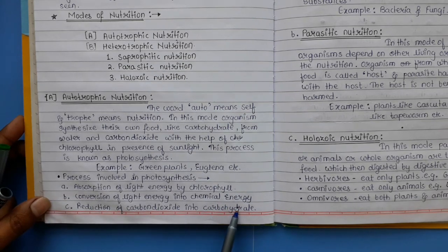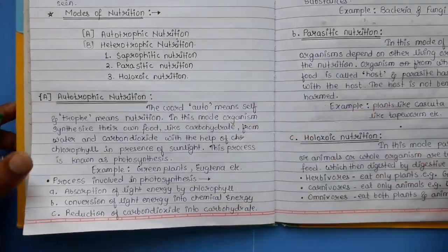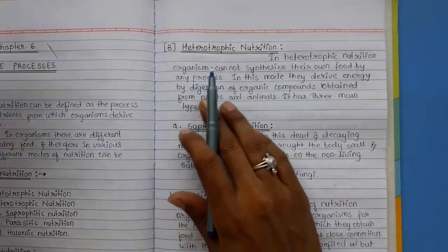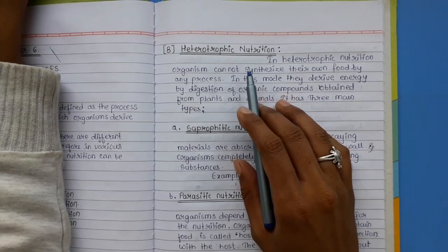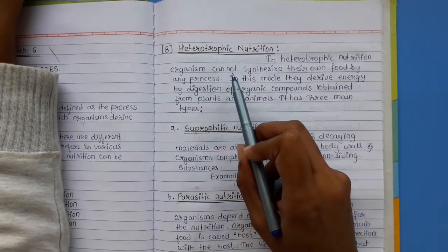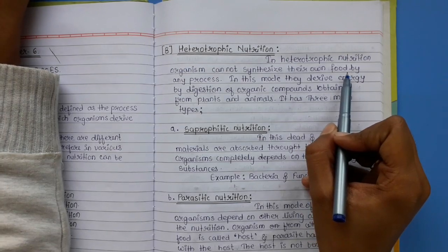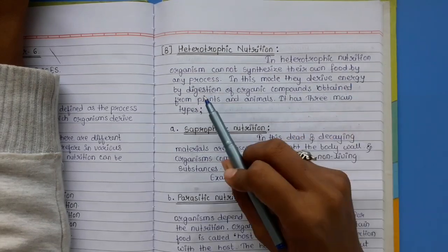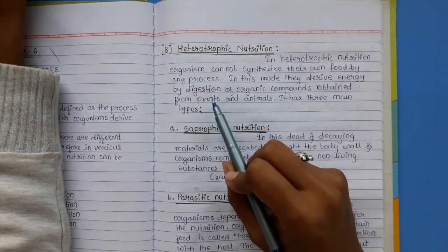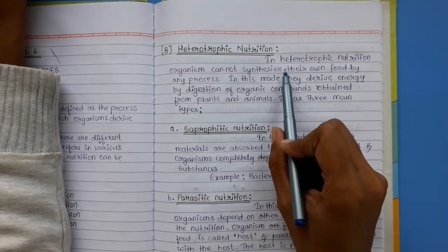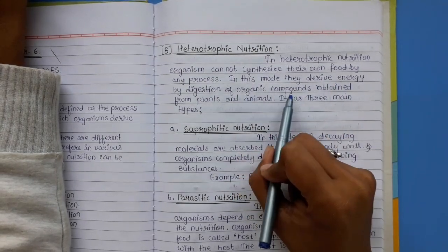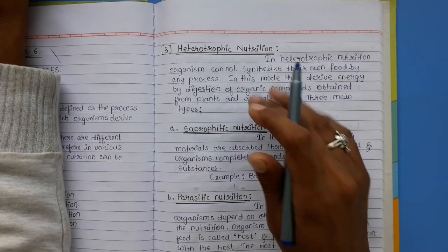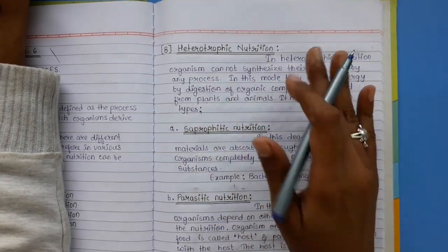Now heterotrophic nutrition: in heterotrophic nutrition, organisms cannot synthesize their own food by any process. They derive energy by digestion of organic compounds obtained from plants and animals. There are three main types of heterotrophic nutrition.